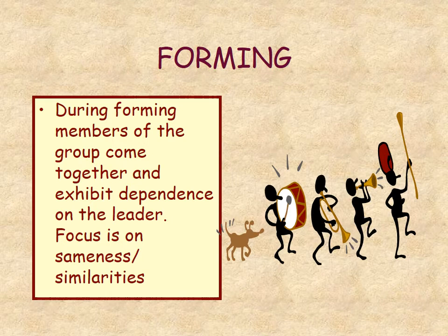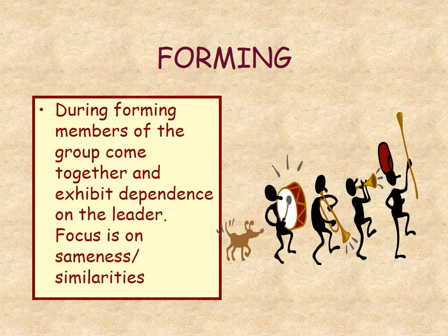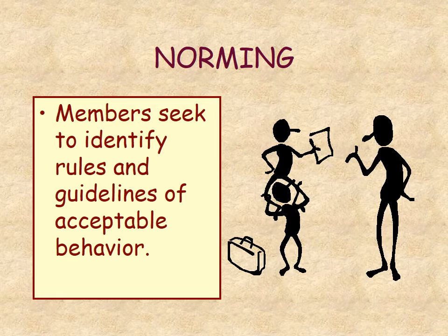Let's talk about how groups are formed. There are four phases. First is forming, where members come together and are dependent on the leader — like first semester when your teachers were guiding you, and you focused on similarities and wanting to connect with your classmates. By second semester you start looking at your differences, your disparate values, and personal needs — this is where conflict can emerge, and this phase is called storming, where you assert your independence.